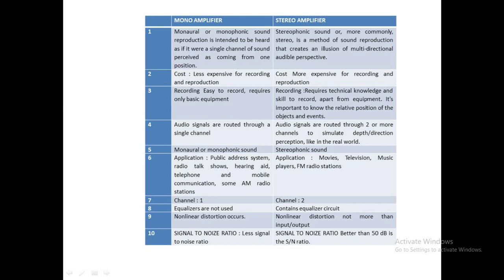In a monophonic system, audio signals are routed through a single channel. In a stereophonic system, audio signals are routed through two or more channels in order to stimulate depth and direction perception like the real world. The simulation of a particular depth and direction, as if we are in a real world, is the benefit of the stereophonic system.